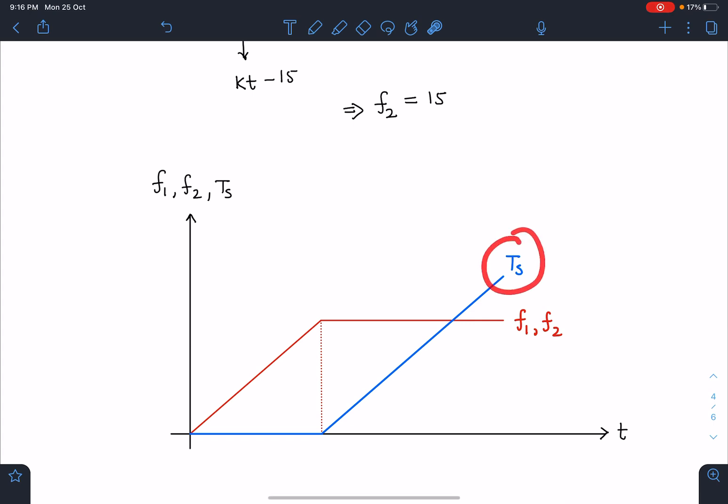Whereas tension in the string in the beginning will be 0 up till 15/k. And after that, kt minus 15 will be the value of this tension in the string and it will keep on increasing.